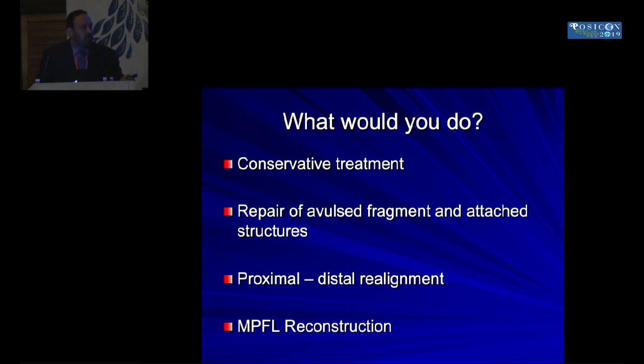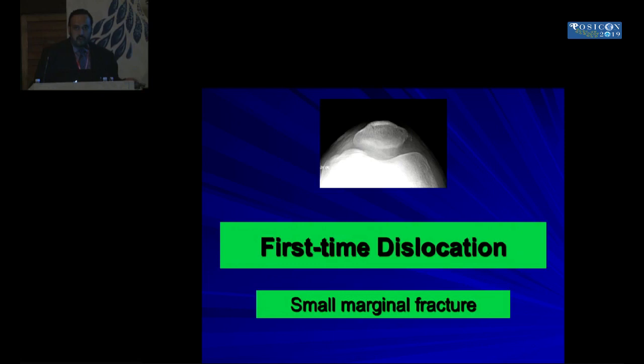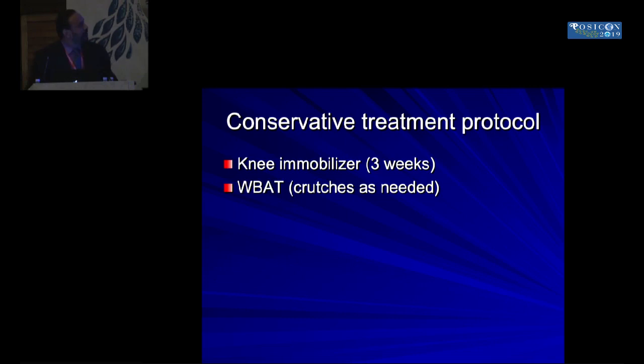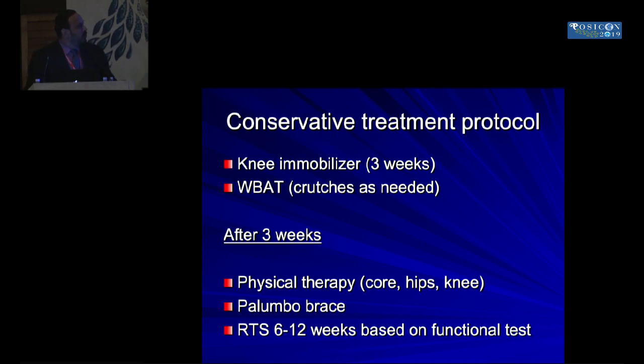For a fracture to be intra-articular, it is usually a bigger piece, and MRI can show whether it has a condylar surface attached — making it an osteochondral fracture rather than a marginal fracture. The treatment protocol for a first-time dislocation in a young patient is conservative: immobilize for a few weeks, weight-bearing as tolerated, and after about three weeks start physical therapy focusing on core, hip, and quads. Use a Palumbo brace; return to sports in six to twelve weeks based on functional tests.